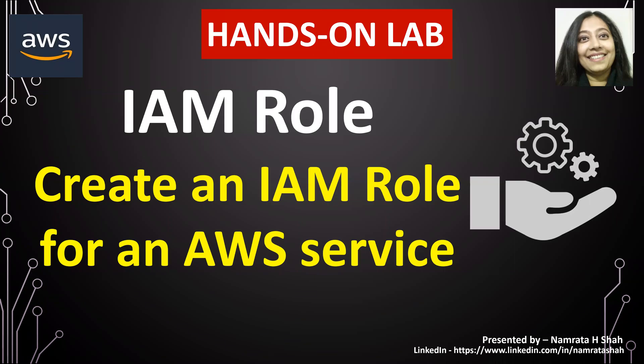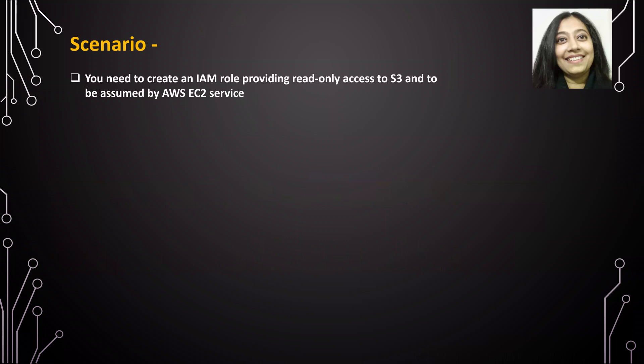Hello all, and welcome to this hands-on lab. In our lab today, we will learn how to create an IAM role to be assumed by an AWS service. The scenario for our lab today: you need to create an IAM role providing read-only access to S3, to be assumed by the AWS EC2 service.